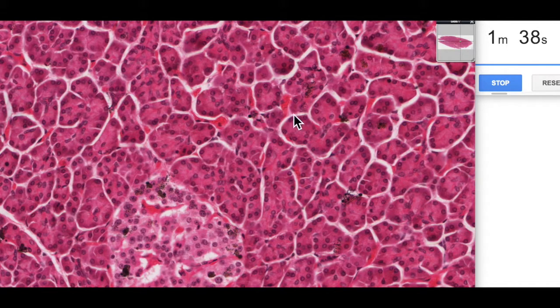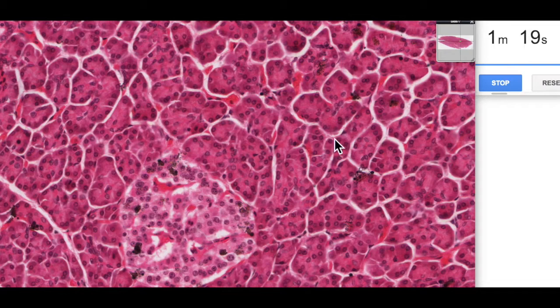Round circular cells arranged circularly, nice round basally located nuclei, generally basal basophilia associated with the basal location of rough endoplasmic reticulum and then the tops of the cell where we store the enzymes as zymogen granules. So they're all arranged into these structures.